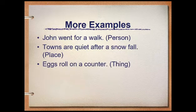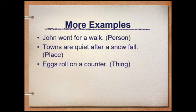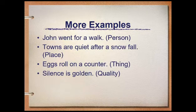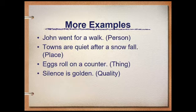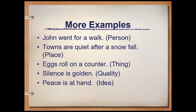Third example: 'Eggs roll on a counter.' Eggs is the subject, 'roll on a counter' is our complete predicate. Next example: 'Silence is golden.' Silence is our subject, 'is golden' is our predicate. 'Peace is at hand.' Peace is the subject and 'is at hand' is the complete predicate.